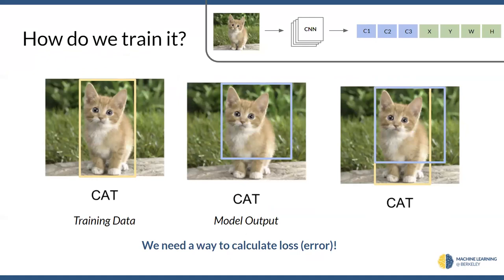Talking about training this — we maybe know how to collect data, but what would our loss function be? We have this image: a photo of a cat with the desired bounding box, and our model outputs this predicted box. How wrong is it? It's harder to quantify because in the past with classification, the network outputs one for 'cat' if it's a cat, so the loss function just checks how close the output probabilities are to the one-hot encoding. But this time it's more complicated because we have two boxes to compare.